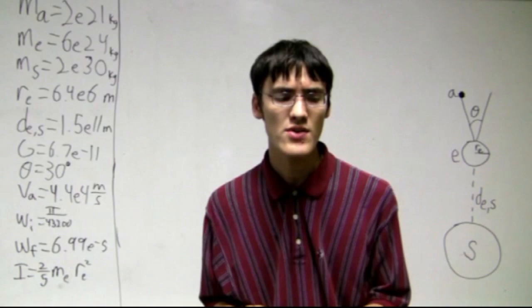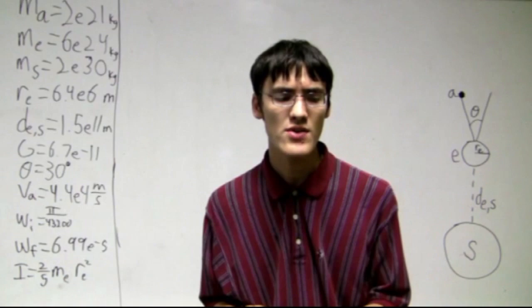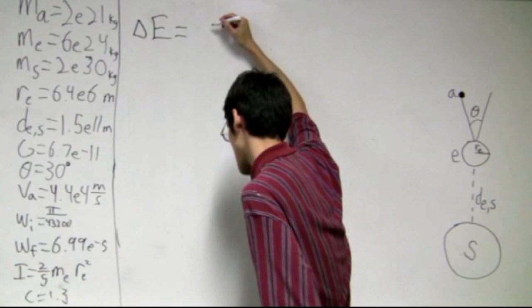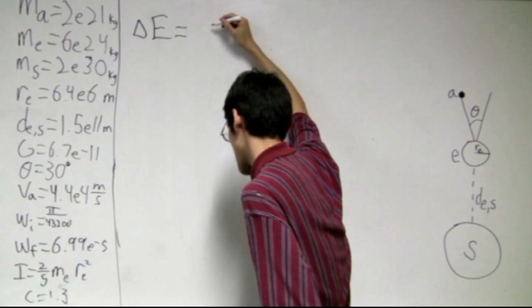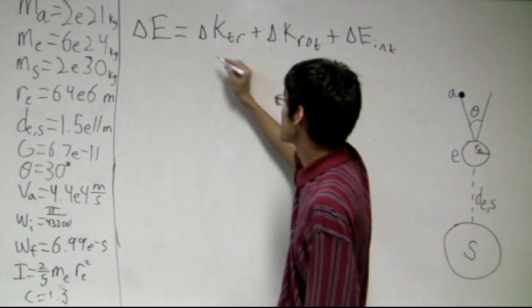Alright, so to figure out the change in temperature, we need to know the specific heat of Earth. I found it in one place online, and it's about 1.3. So we know that the change in energy of the Earth can be a lot of things. It can be delta K_trans plus delta K_rotational plus delta K of a lot of things plus delta E_internal.